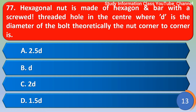Next question: A hexagonal nut is made of a hexagon and a bolt with a screw-threaded hole in the center. Where D is the diameter of the bolt, theoretically the distance across the corners of the nut is Option C, that is 2D. Option C is the correct answer.